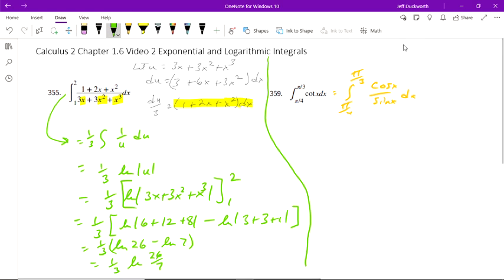So here if we let u equal sine of x, which is our denominator, then when we take the derivative we'll get rid of the numerator. That means du is equal to cosine of x dx, which is exactly what we have left over.